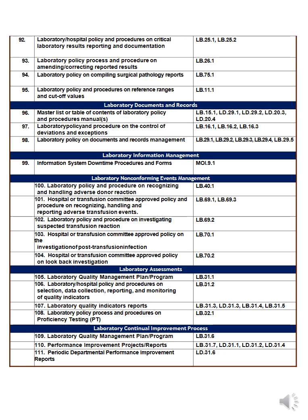Number one hundred and eight is the laboratory policy and procedure on proficiency testing. Number one hundred and nine is the laboratory quality management plan and program. Number one hundred and ten is performance improvement projects — Sibahi requires around four improvement projects inside the lab: two general and two for blood bank. Prepare two improvement projects for the general lab with reports on progress. If an initiative is not performing well, you must improve it.